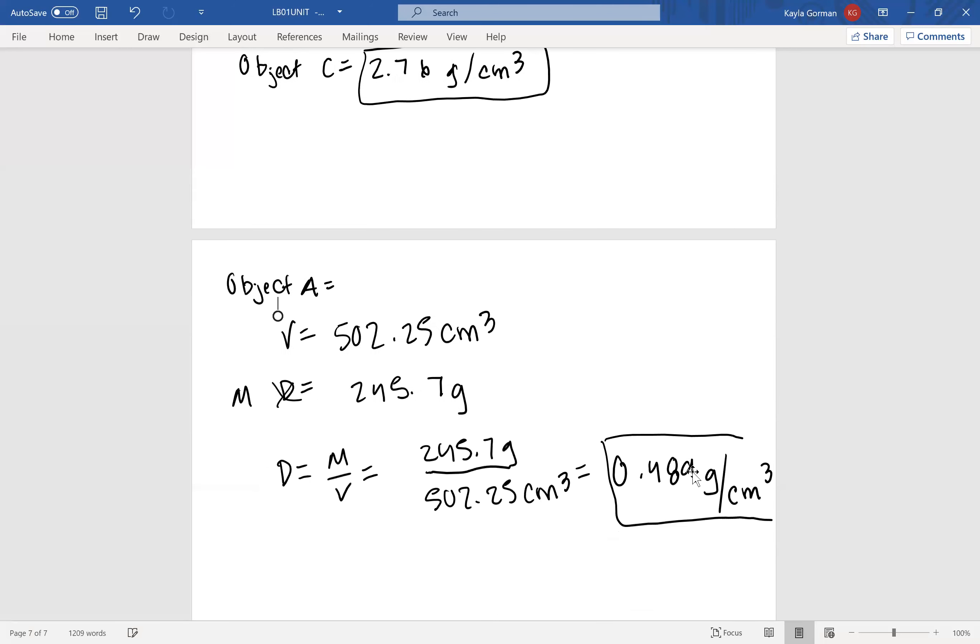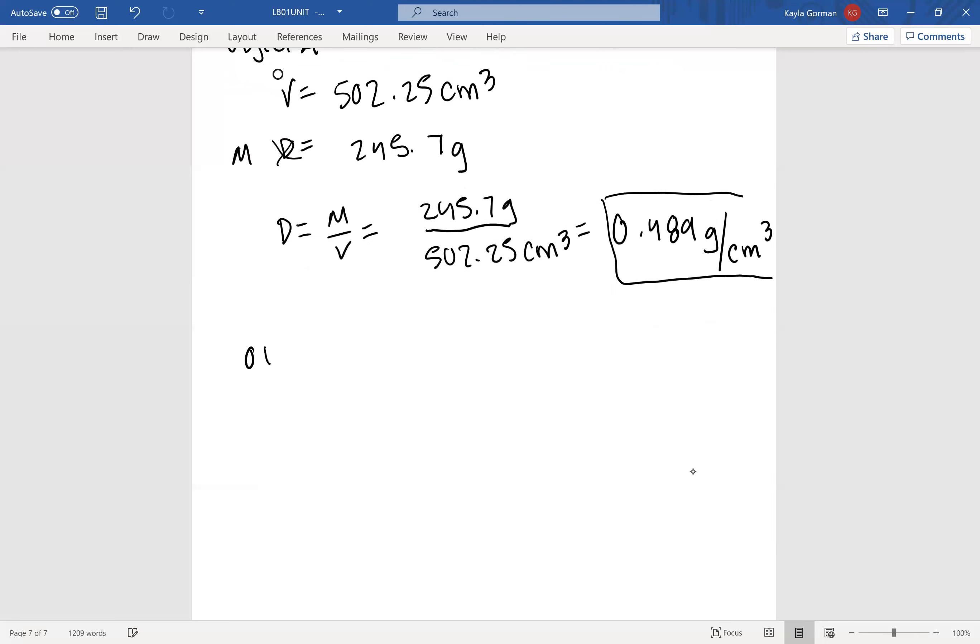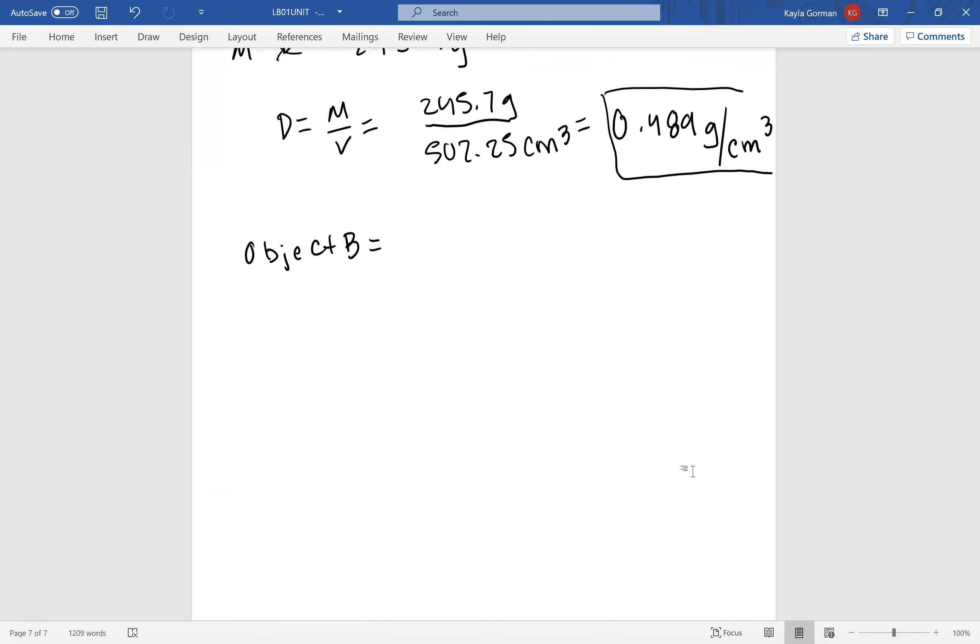All right, now let's do Object B so we can compare the last of them. Object B, so originally right now we have the current volume that we have is 0.18 pounds per cubic inch.